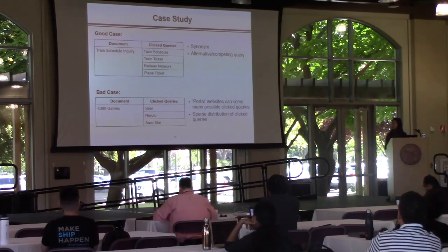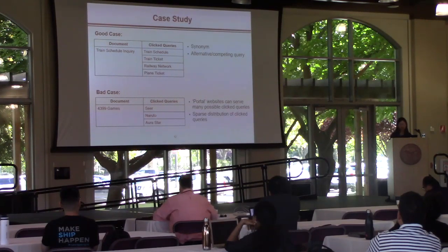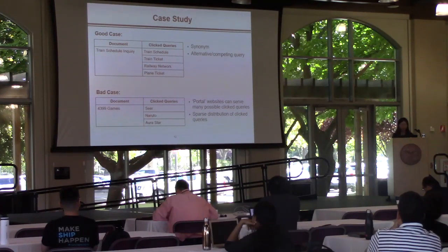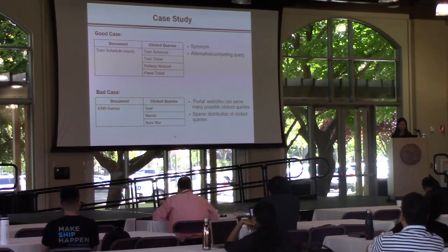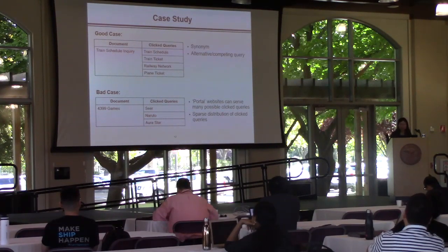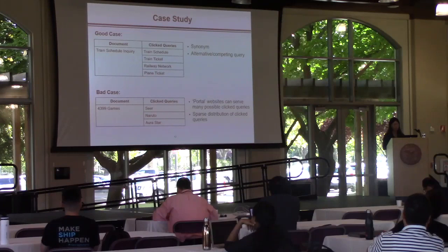Here are the case studies. For good cases, alternative or competing queries provide extra information to document representation. However, we also have bad cases. From observation, the main reason for bad cases is the sparse distribution of clicked queries under the same document. For example, a portal game website has so many possible clicked queries, which makes the query distribution very sparse and hard to leverage in our model.